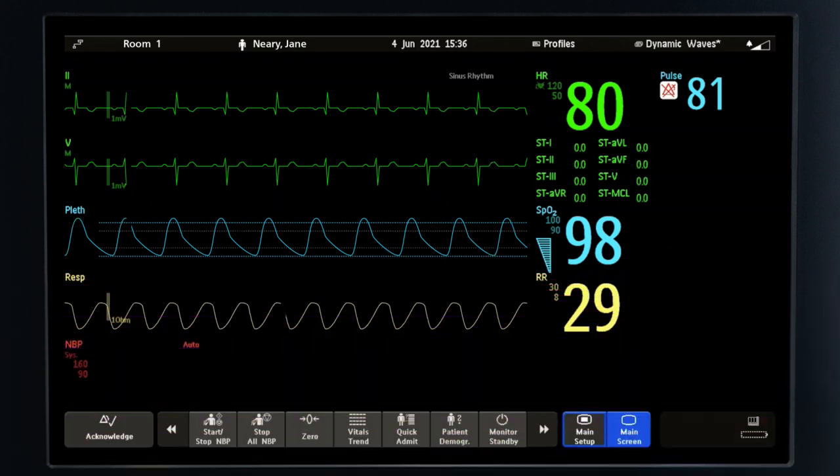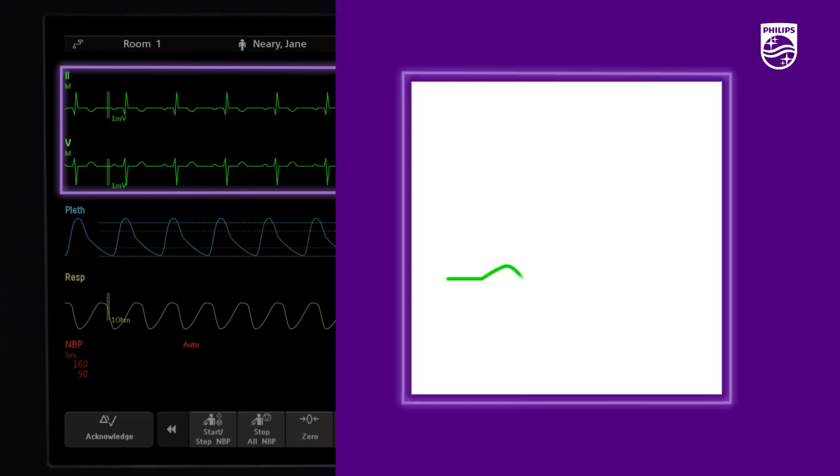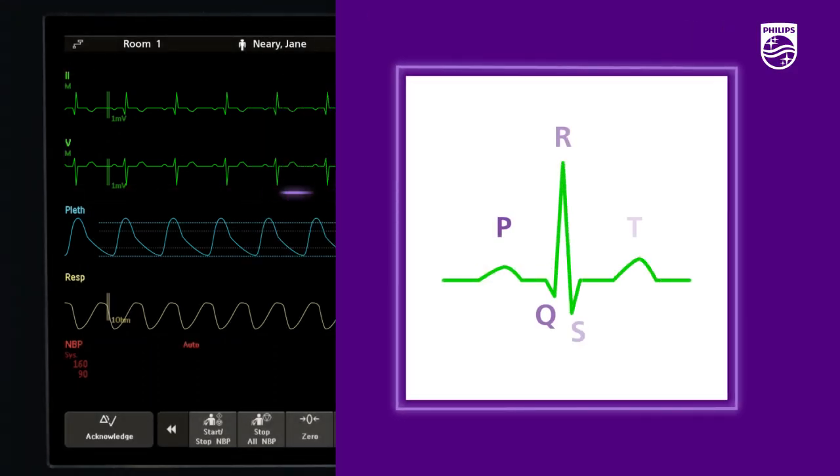When looking at the ECG signal for both primary or secondary lead, the QRS complex should be tall and narrow. The QRS should be completely above or below the baseline. In other words, it is not biphasic.